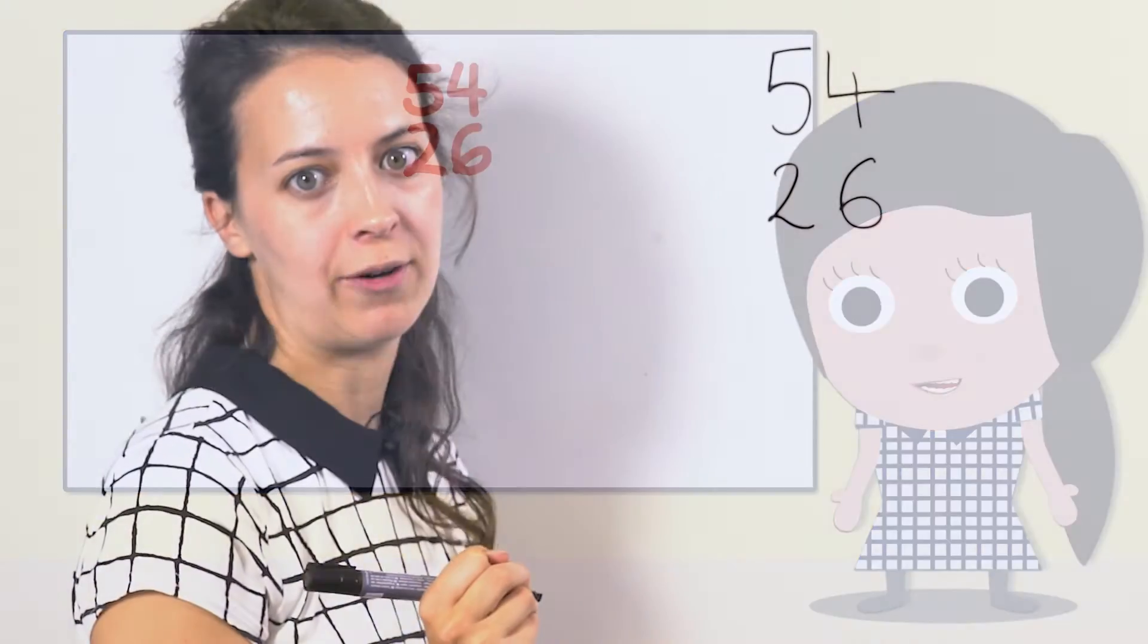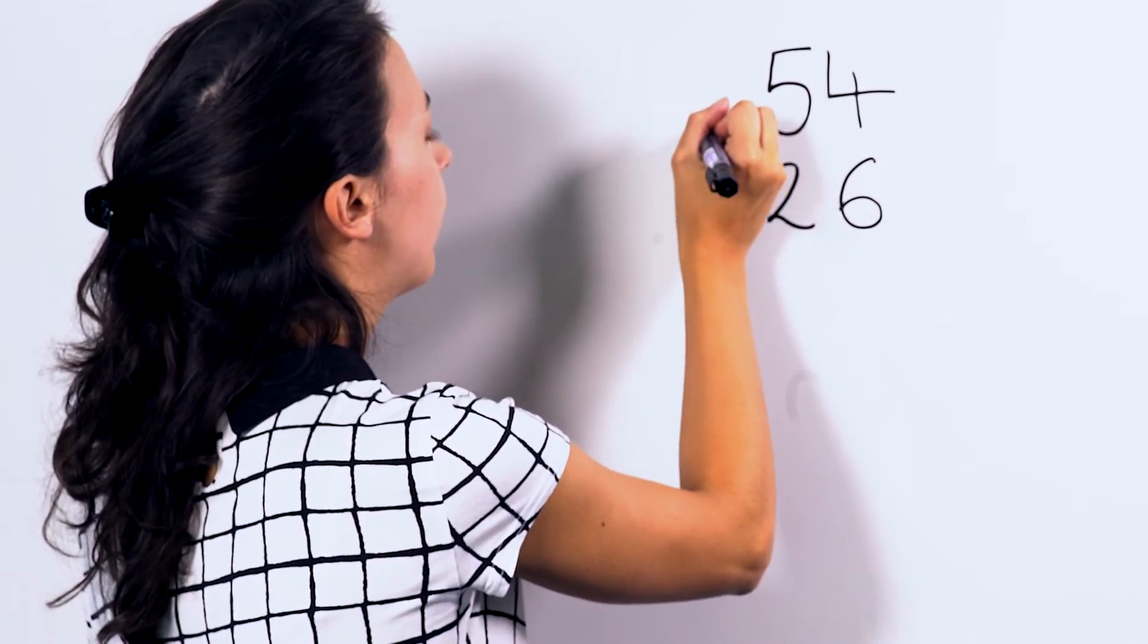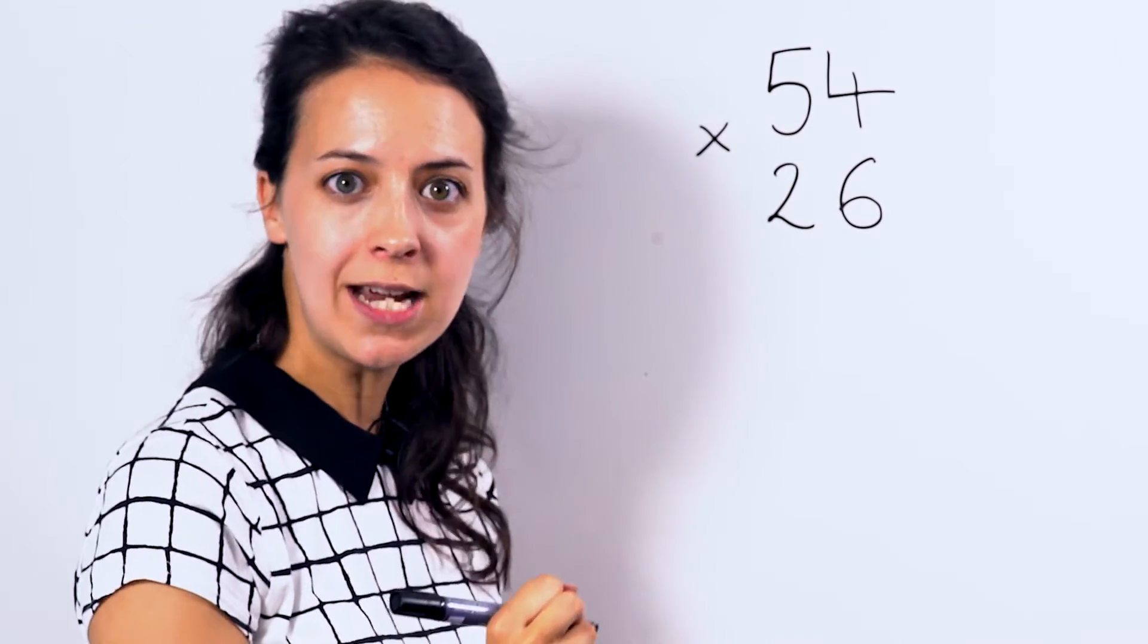To the left of the calculation, write the multiply sign and underneath, draw one line.